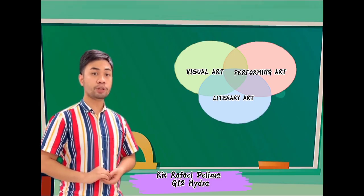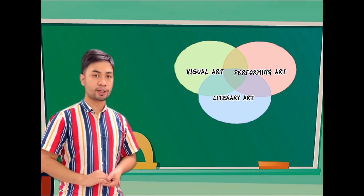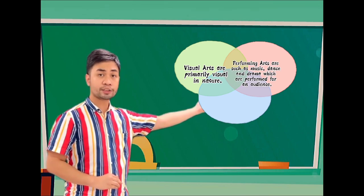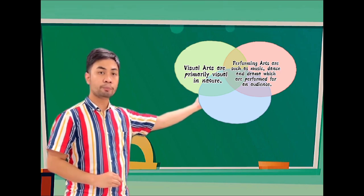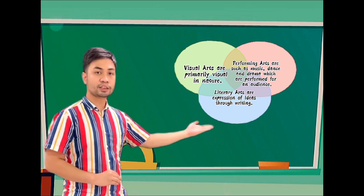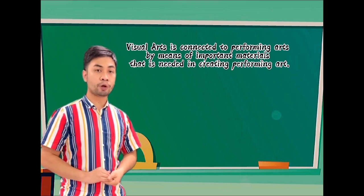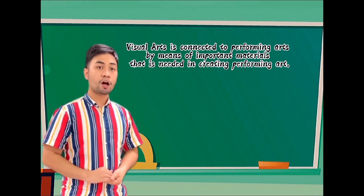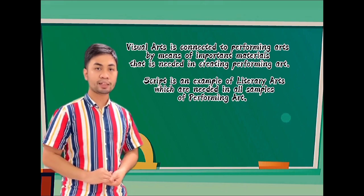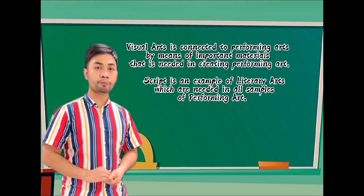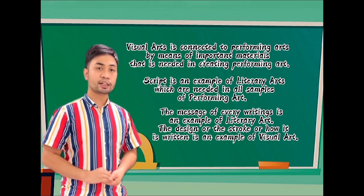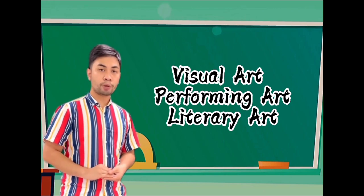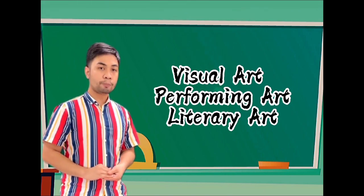Now I am presenting the connection of different contemporary art forms using the three-circle Venn diagram. Visual arts are art forms that create works primarily visual in nature. Performing arts are arts such as music, dance, and drama which are performed for an audience. Literary arts are an expression of ideas through writing. Visual arts is connected to performing arts by means of important materials needed in creating performing arts, such as the design of the stage and artist's costume. A script is an example of literary arts which is needed in all forms of performing arts. The message of every writing is an example of literary arts, and the design or stroke of how it is written is an example of visual arts. When visual arts, performing arts, and literary arts are combined, it can produce a complete and creative kind of art.